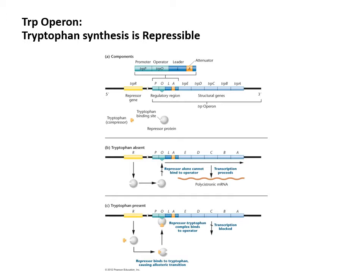When you look at these processes, option B shows tryptophan. If there's no tryptophan, the cell will need to make some — the repressor is not the right shape in this scenario, so it won't be able to bind to the operator, and the polymerase will get to bind to the promoter and express the genes. Whereas when tryptophan is present, tryptophan will bind to the repressor and change its shape so that it now fits the operator — blocking polymerase from getting from the promoter through to the genes. So transcription is blocked.